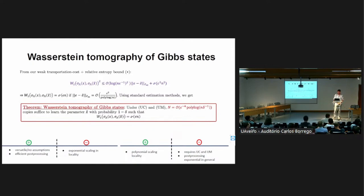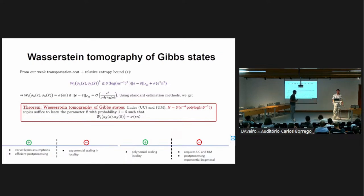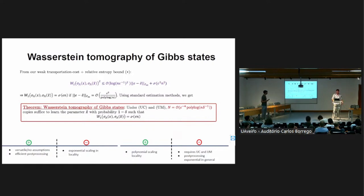Question about the n in the Wasserstein distance theorem: Unlike trace distance, Wasserstein distance is between 0 and n (not 0 and 1). For an observable like the sum of Pauli Z on each qubit, which is typically of order n, a Wasserstein distance of epsilon·n means you make an error of order epsilon·n — so for extensive observables this is a good recovery guarantee.